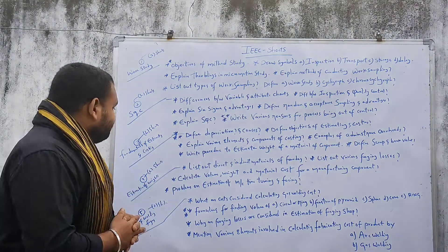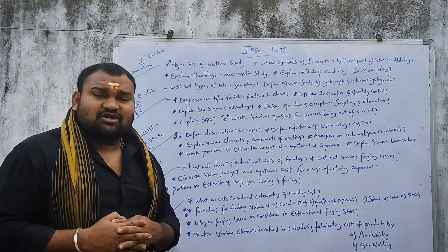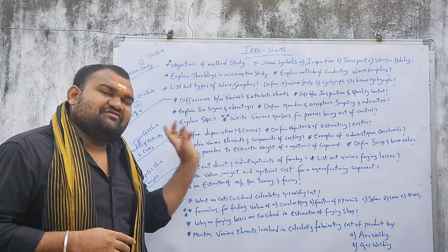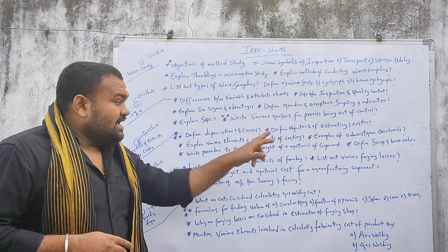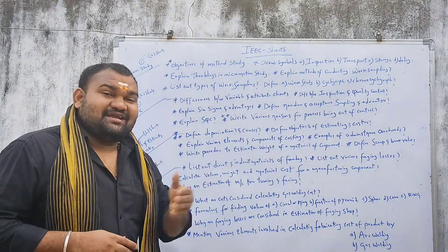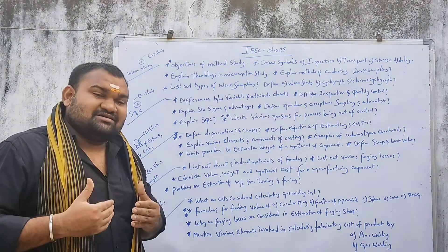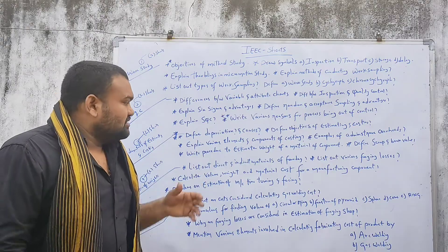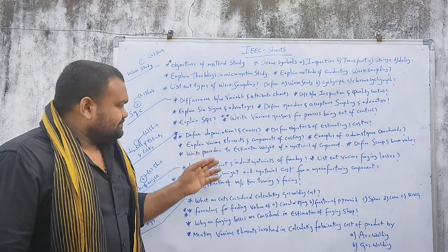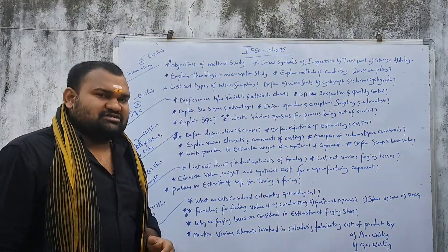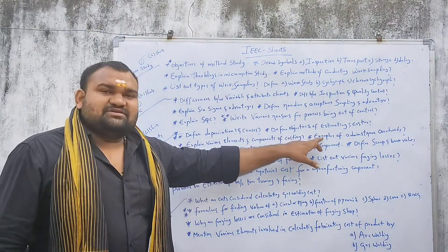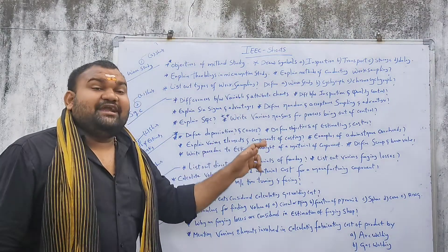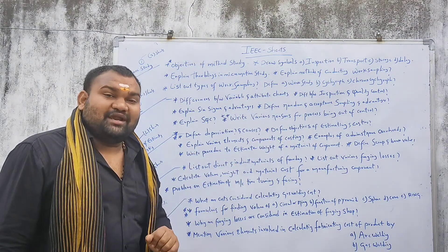The third chapter is Fundamentals of Estimation and Costing. This is the two short sources. Define depreciation and its causes — it's a very important question. Define objectives of estimating and costing. Explain various elements and components of costing. Example of administrative overheads.